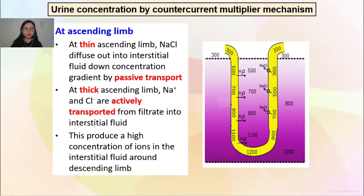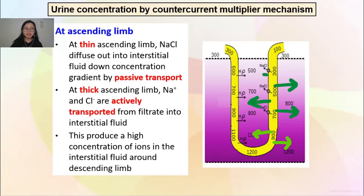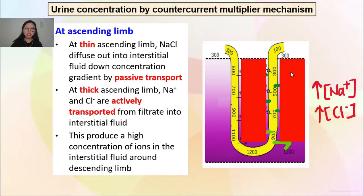Now we see what happens after the hairpin turn as we go into the ascending limb. Bila dia sampai bahagian thin ascending limb, NaCl will diffuse out into interstitial fluid down the concentration gradient by passive transport. At the thick ascending limb, Na+ and Cl− are actively transported from filtrate into interstitial fluid. Di bawah adalah passive transport; di atas active transport. This will produce a high concentration of ions in the interstitial fluid around the descending limb.